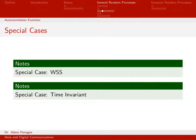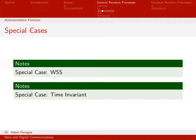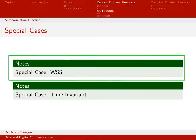In the previous video, we came up with some expressions for the input and output autocorrelation function, specifically the cross-correlation function. What we're going to do now is specialize those expressions for the special case of being either wide-sense stationary or having a time-invariant system. So first, let's focus on wide-sense stationary.